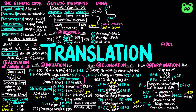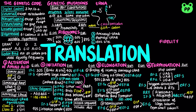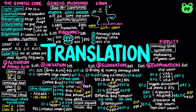There are two mechanisms that ensure the fidelity of translation. Aminoacyl tRNA synthetases contain proofreading activity that ensures the attachment of the correct amino acid. A second genetic code, including 10 or more specific nucleotides, is also involved in discriminating tRNAs by their specific aminoacyl tRNA synthetase.